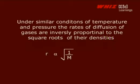Graham's Law and Diffusion of Gases. Under similar conditions of temperature and pressure, the rates of diffusion of gases are inversely proportional to the square roots of their densities. R is proportionate to square root of 1 by M.